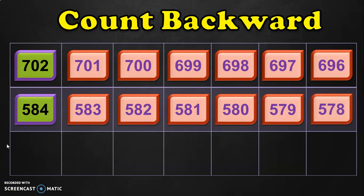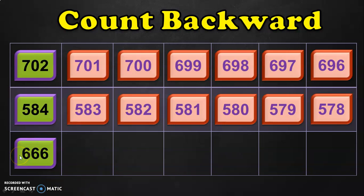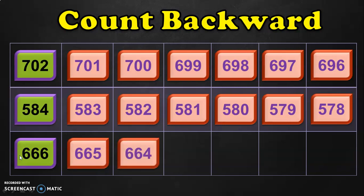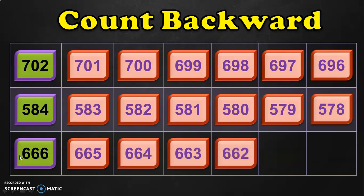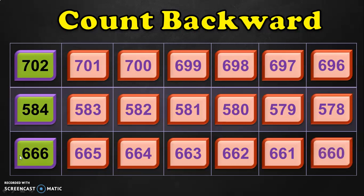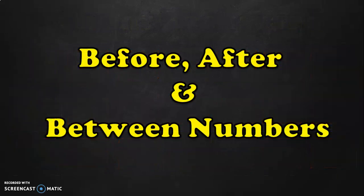Let us do one more example in the counting backward number activity. The number given is 666. The number before 666 is 665, 664, 663, 662, 661. And before 661 it is 660. So before 661 you will get 660. Let us move on to the next set of number activities.